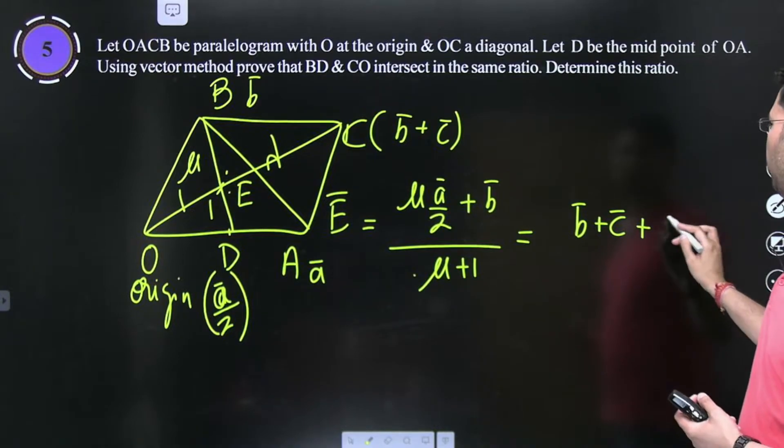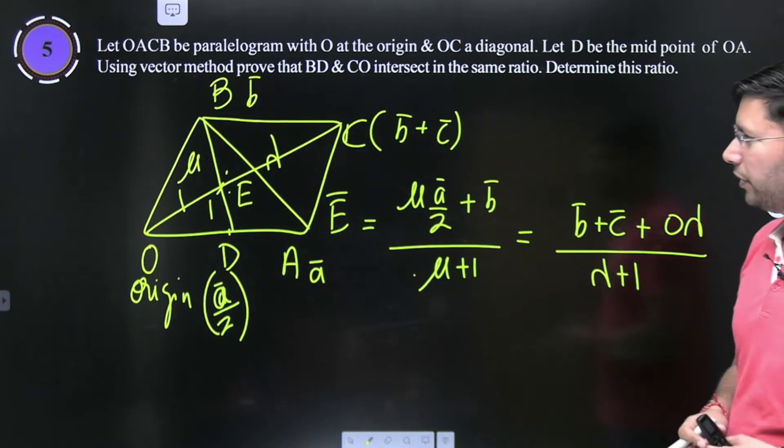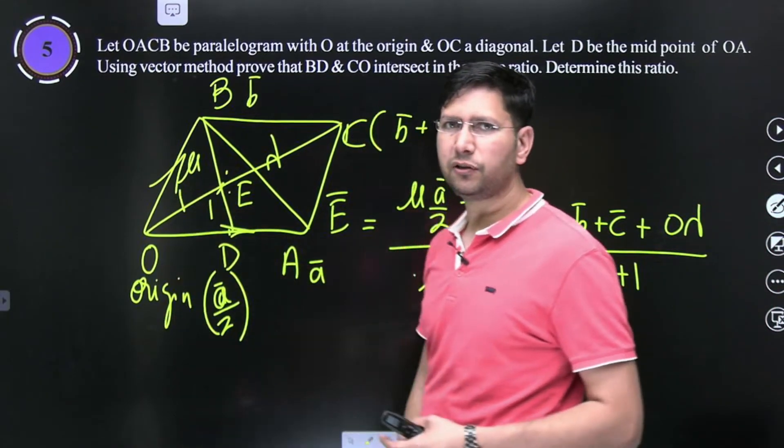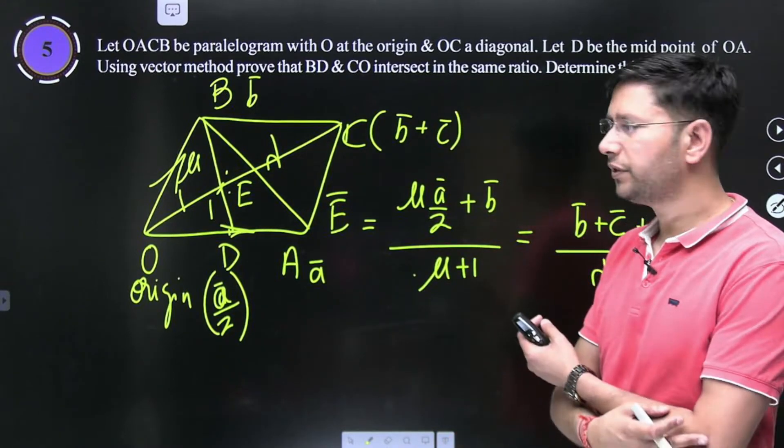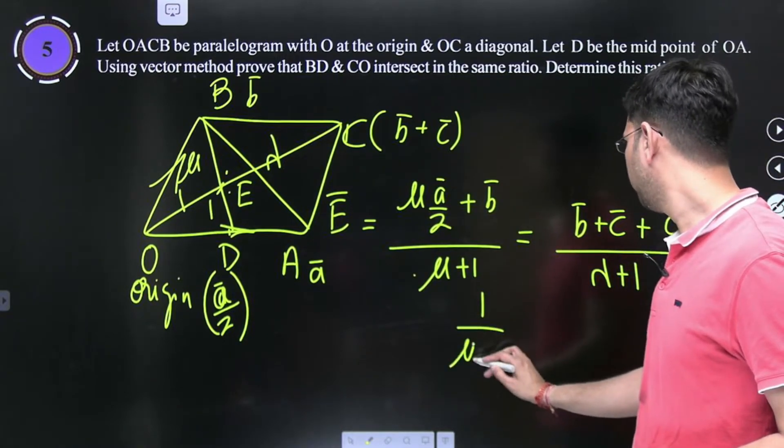E is lambda into B plus C divided by lambda plus 1. A and B are non-collinear vectors as you can see here, adjacent sides of parallelogram. So non-collinear vectors, we can compare the two sides. So we get from the left side 1 upon mu plus 1.